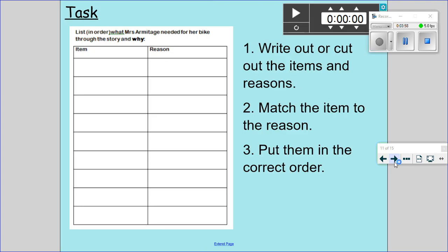OK, so that's it. That's the end of Mrs. Armitage on Wheels. So what you need to do is you have in your files for today's lesson items and reasons. And you need to write them out or you can cut them out. You don't need to print them. And you need to match the item to the reason.